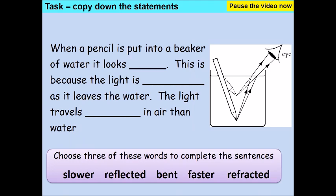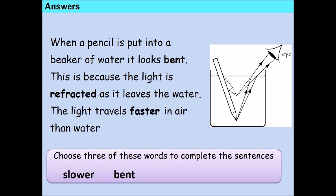You've got another task — filling in the blank spaces. Copy down the statements on this slide and, using the words at the bottom, fill in the three blank spaces. Hint: two of the words are not needed. Pause the video, use the diagram on the right to help you, and have a go now. When we put a pencil in a beaker of water, it looks bent. That's because light is refracted as it leaves the water, entering air, which is a less dense medium, which means it is travelling faster in the air than in the water.